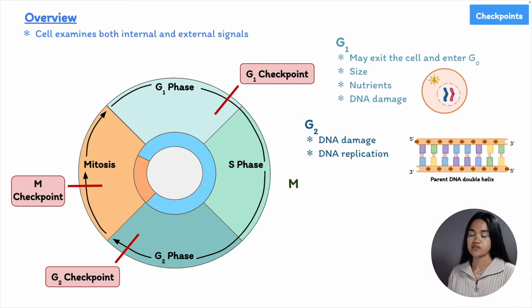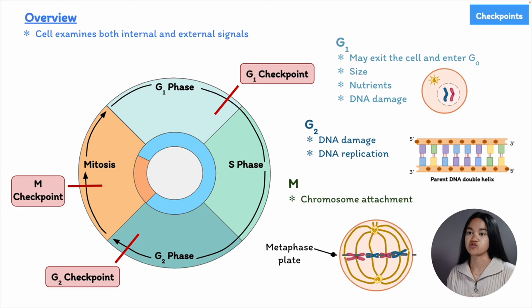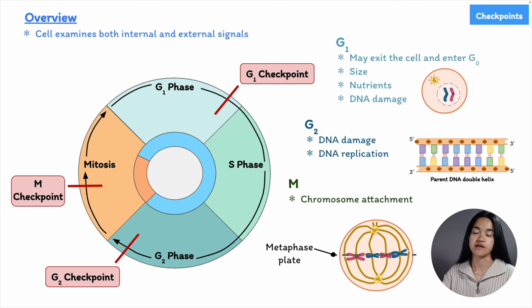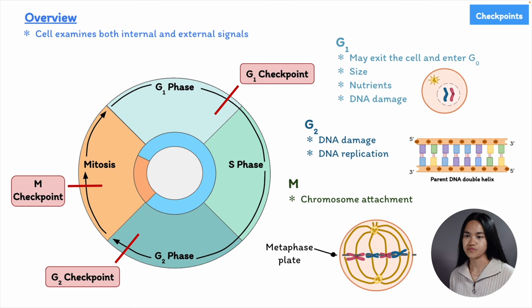There's also a checkpoint in the M phase. A cell in mitosis receives a stop signal when any of its chromosomes are not properly attached to the mitotic spindle, which is the component that separates the chromosomes during mitosis. When all the chromosomes are attached, the cell will give a go-ahead signal, allowing the cell to continue into anaphase. The cell will pause mitosis until all the chromosomes are captured by the spindle. In the event of unfavorable conditions, the control system can momentarily stop the cycle at specified transition points in G1, G2, and M phases.